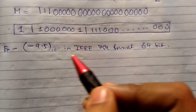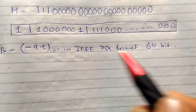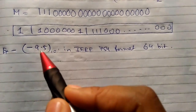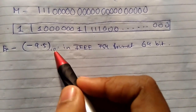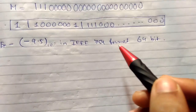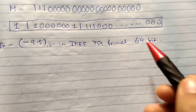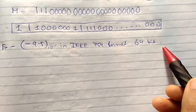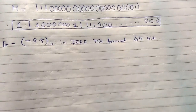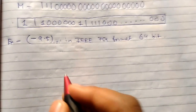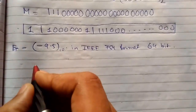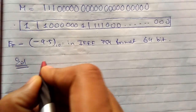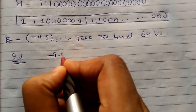Now we'll see the second example for double precision format. We need to convert -9.5 in decimal into IEEE 754 format. Here it is given as 64-bit, so this is double precision format. We start the solution by first converting the number into binary.